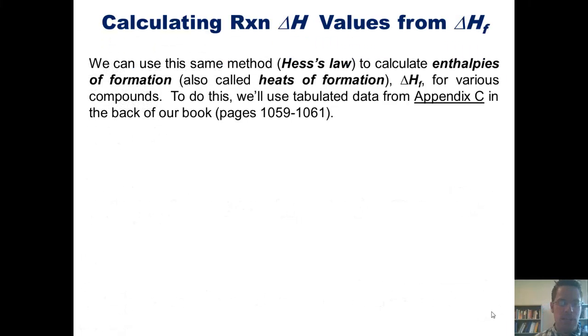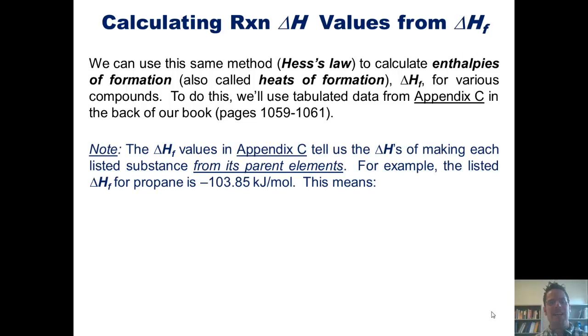From the examples we just did, we have seen that the ΔH of formation values in Appendix C tell us the individual enthalpies of making each listed substance from its parent elements. What that means for the previous examples, NO2 and sodium bromide, is that the enthalpy values we calculated are the actual values of energy transfer that will occur when those two substances are formed.